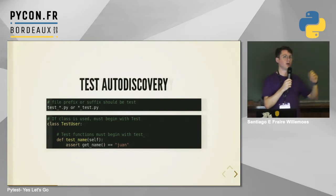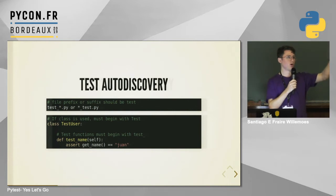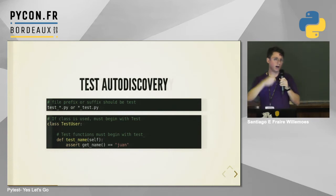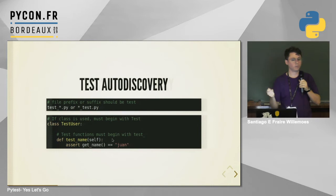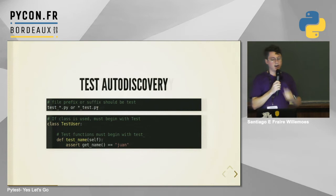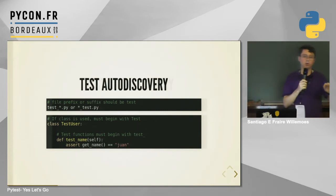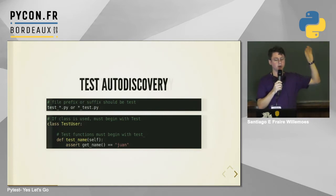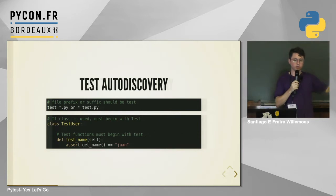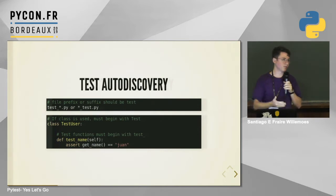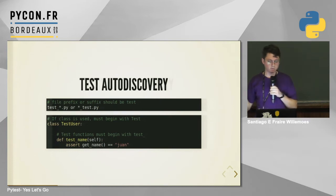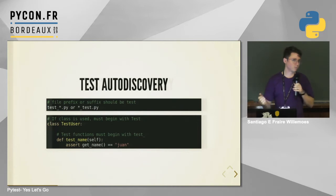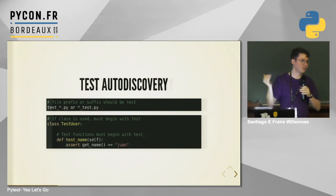How does it work? Usually in the root of your project you have a source folder and a test folder. Inside the test folder, files should begin or end with 'test'. Inside those files, functions should begin with 'test'. If you use a class to group your tests, the class should also begin with 'test'. That's it — run pytest and it will run your tests. It's also quite similar to unittest, so it's a drop-in replacement.